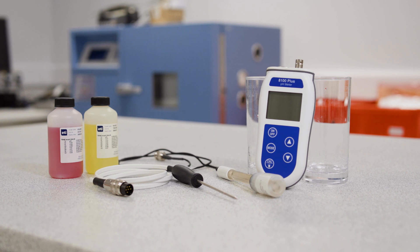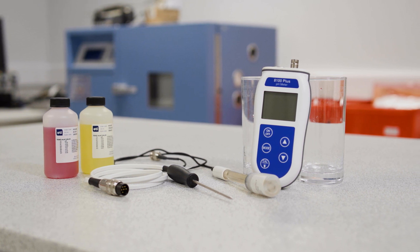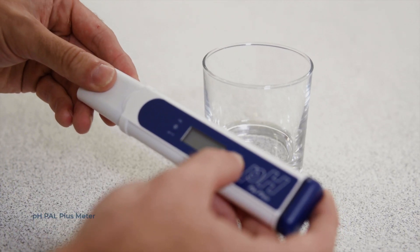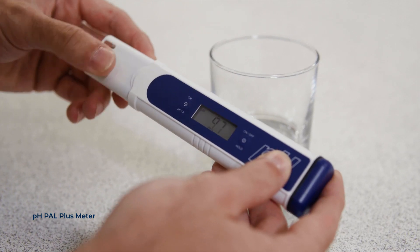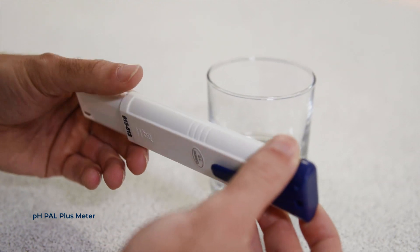Choosing the right pH meter for your application is important for ensuring you get the level of accuracy you require. Pocket pH testers, like the ETI pH-PAL, are a great budget choice.